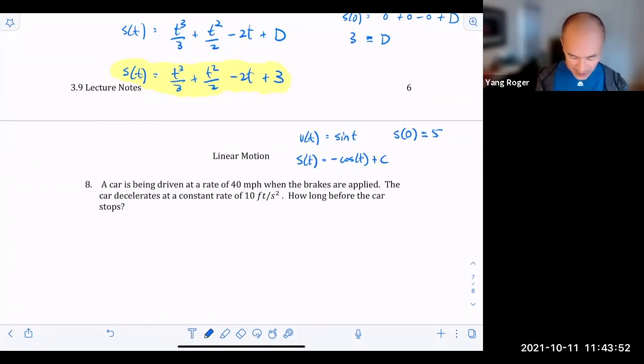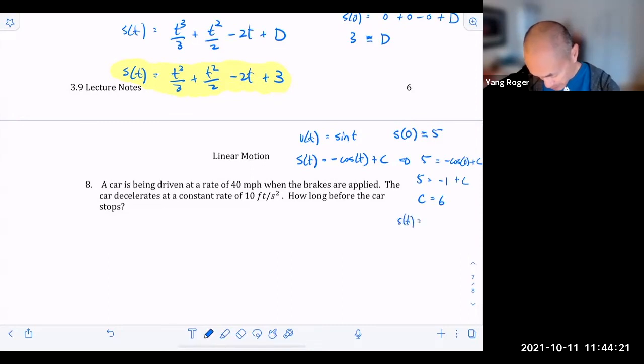But when you plug in a zero on both sides, you're going to get five on the left-hand side and on the right-hand side, you're going to get negative cosine of zero plus C. But cosine of zero is not zero. Cosine of zero is one. So this is really five is equal to negative one plus C. So in this case, your C is actually equal to six. So your actual antiderivative would be position function is equal to negative cosine of T plus six, actually.